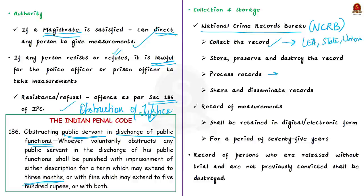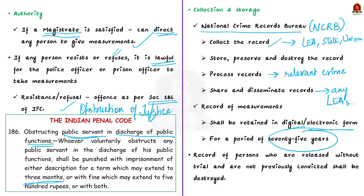The NCRB will process records with relevant crime and criminal records, and whenever necessary, share and disseminate them with any law enforcement agency. For how long will such measurements be stored? As per the bill, records will be retained in digital or electronic form for a period of 75 years from the date of collection. After that, the records will be destroyed. But records can be destroyed before 75 years under certain circumstances — for example, if a person not previously convicted is released without trial, or is discharged or acquitted after exhausting all legal remedies.